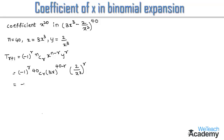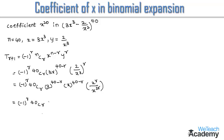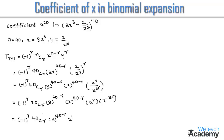This can be written as minus 1 whole power r, into 40Cr, into 3 power (40 minus r), into x power (40 minus r), into 2 power r divided by x power 3r. We can rewrite this as minus 1 whole power r, into 40Cr, into 3 power (40 minus r), into 2 power r, into x power (40 minus r), into x power minus 3r. Since the bases are equal, the powers are added.